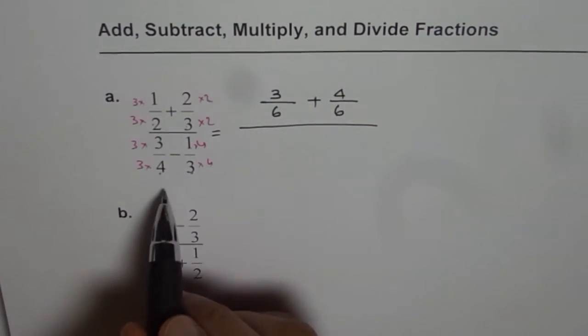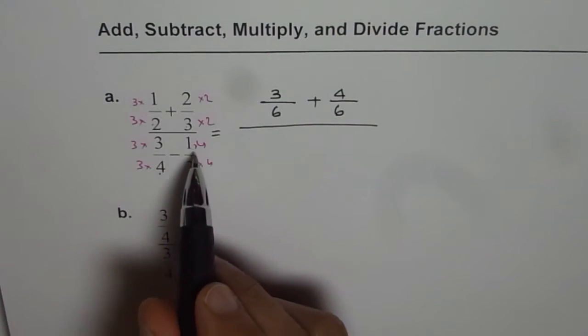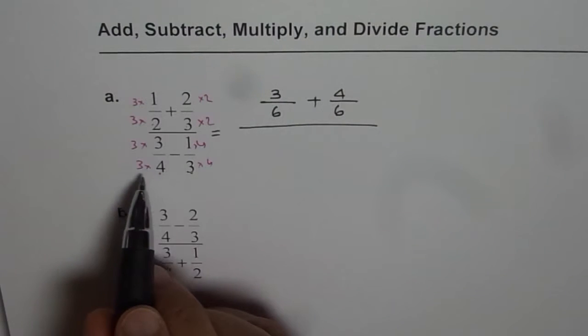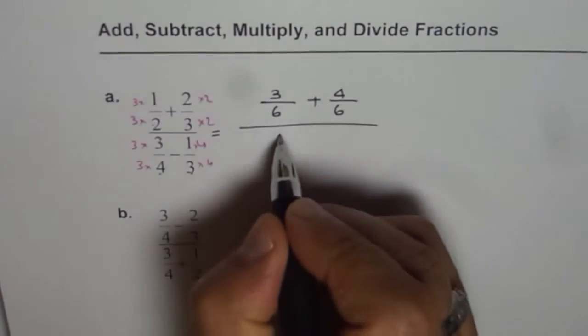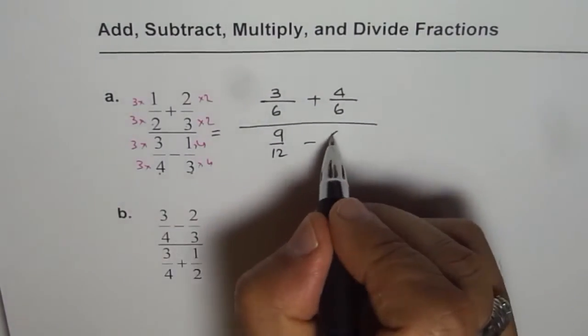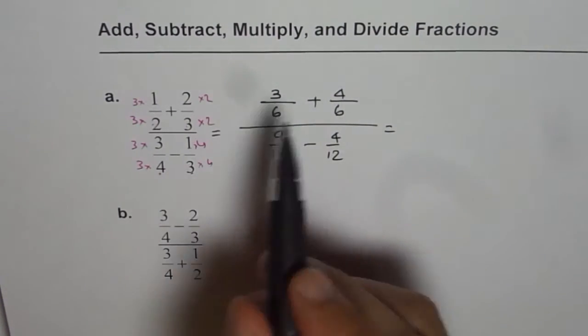Now in the denominator part, we have to take away 1 over 3 from 3 over 4, making a common denominator of 12. So we'll multiply first terms by 3. We get 9 over 12 take away 4 over 12.